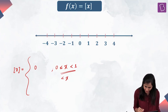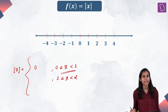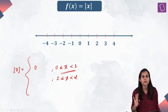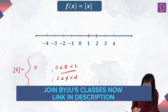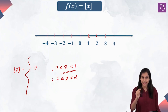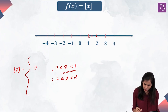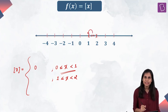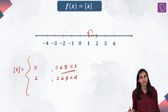If x is greater than or equal to 1 and strictly less than 2, what is bracket x? When x is equal to 1, bracket x is 1. When x is strictly sandwiched between 1 and 2, the integer to the immediate left of x is 1. That means bracket x is again 1 throughout this interval.